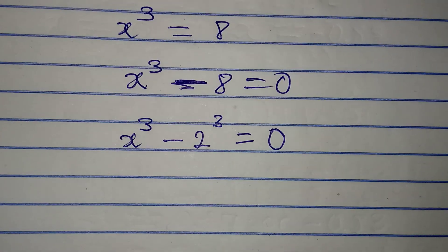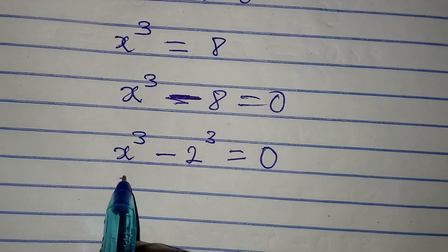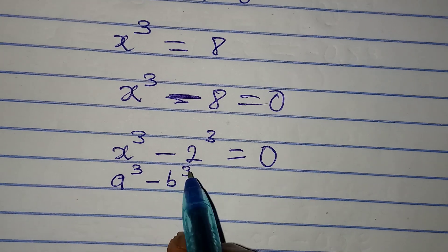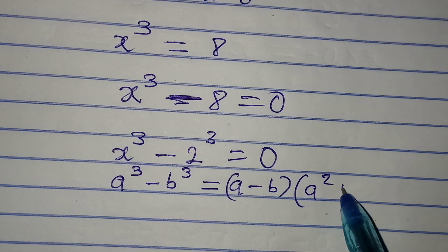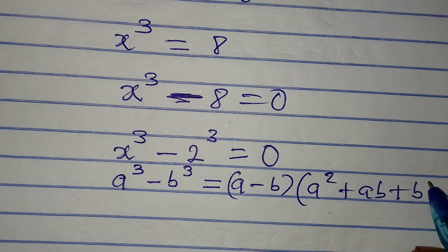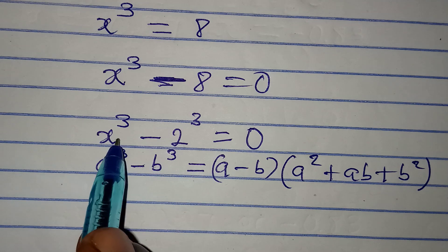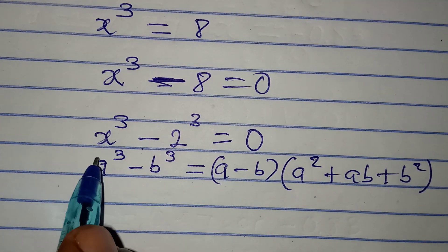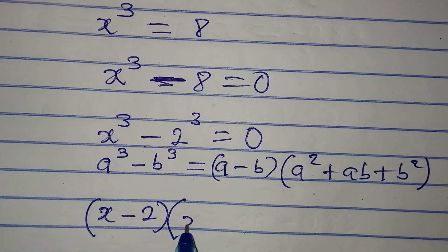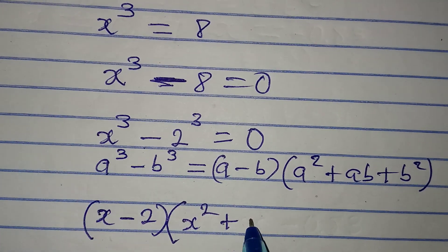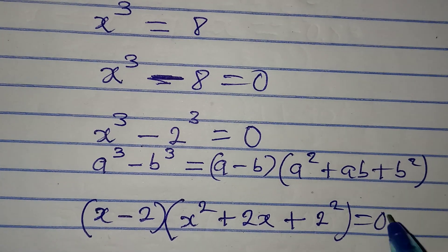We now apply the difference of cubes formula: a cubed minus b cubed equals (a minus b)(a squared plus ab plus b squared). Applying this, x cubed minus 2 cubed becomes (x minus 2)(x squared plus 2x plus 2 squared), which equals 0.